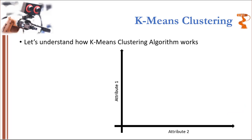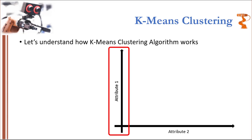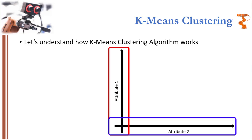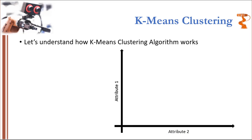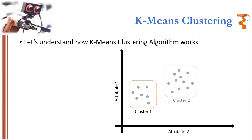I am going to explain k-means clustering through an example of a two-dimensional feature space. That is, I am going to use two features to identify and cluster the objects. One axis is going to represent attribute one and the other one attribute two, just as in the example where we divide students based on weight and height. Based on these two attributes, every data point will lie somewhere on this feature space. Let's suppose that there are certain data points shown by gray dots.